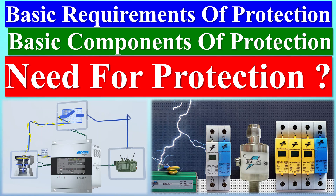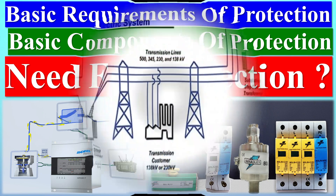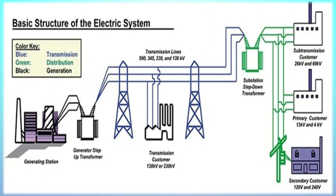A power system is not only capable to meet the present load but also has the flexibility to meet the future demands. A power system is designed to generate electric power in sufficient quantity to meet the present and estimated future demands of the users in a particular area, to transmit it to the areas where it will be used and then distribute it within that area on a continuous basis.